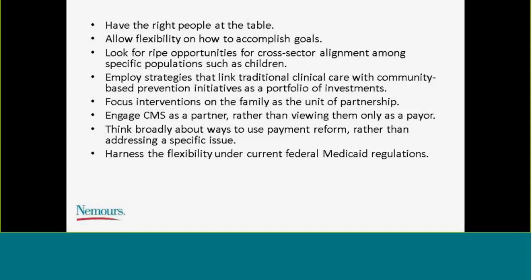The first lesson is having the right people at the right table. States need a high-level champion involved from the beginning. Engagement of the state's Medicaid director helps facilitate decision-making, collaboration with counterparts at other agencies, and builds momentum for new initiatives. The second lesson is allowing flexibility on how to accomplish goals — it's important for government to set transformational goals, but the specifics of how those goals are achieved should be led by all stakeholders.